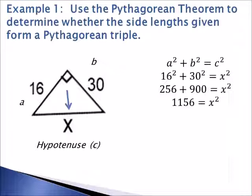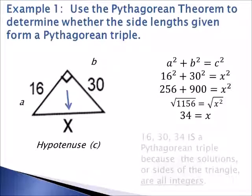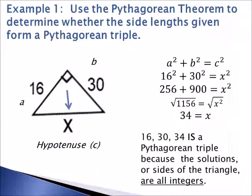In order to get rid of the x squared, we must square root both sides, so we are left with 34. The 16, 30, 34 triangle is in fact a triple because they are all integers.